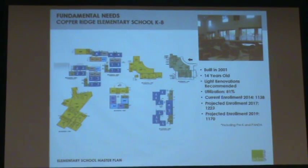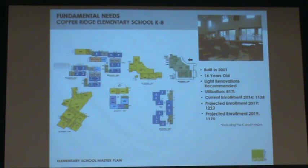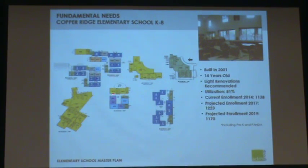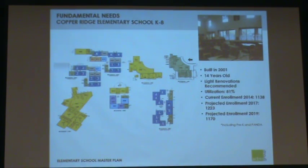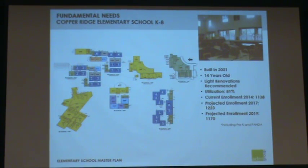Copper Ridge Elementary School, K-8, was built in 2001 — 14 years old with light renovations recommended. Utilization is 81%. You'll notice some gray classrooms that are not being utilized, and also some purple classrooms. Current enrollment in November 2014 is 1,138. Projected enrollment for 2017 is 1,223, and for 2019 is 1,170.